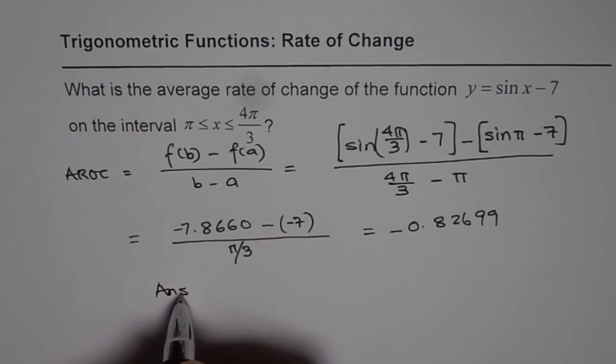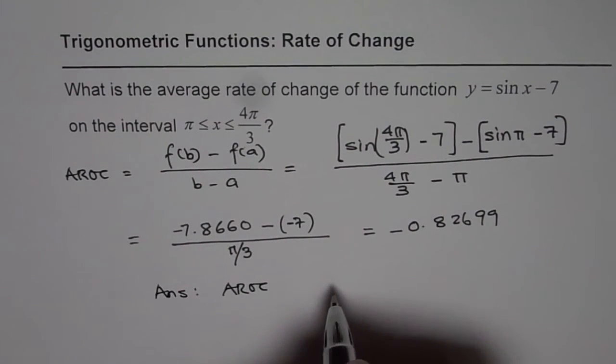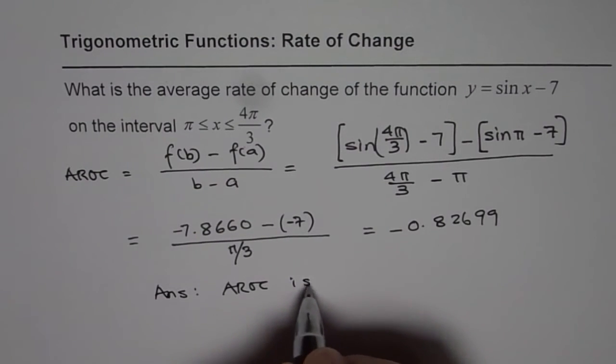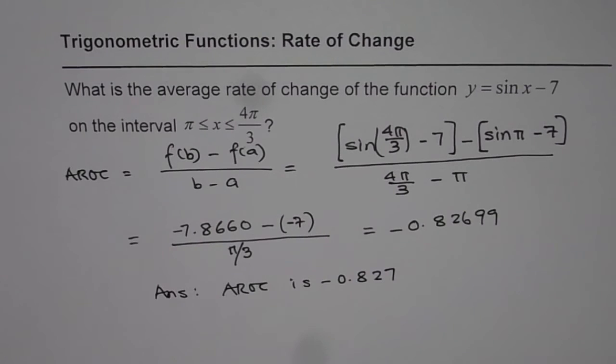Our answer is that average rate of change for the function is minus 0.82, we can round this to 7. That is how we can answer this question. Thank you and all the best.